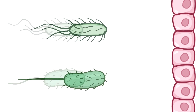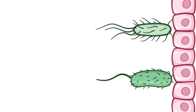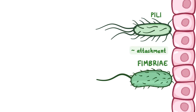Finally, bacteria can move or attach to other cells and surfaces with the help of structures found on their external surface. They have pili, which are hair-like structures that allow them to attach to other cells, and when these are shorter, they're called fimbriae, and help the bacteria attach to surfaces. They can also have flagella, which are long, whip-like protrusions that allow the bacteria to move.